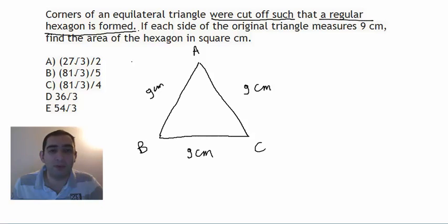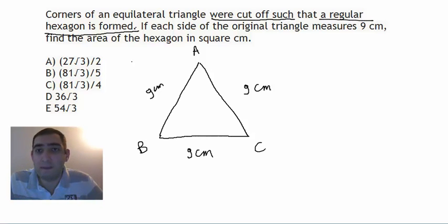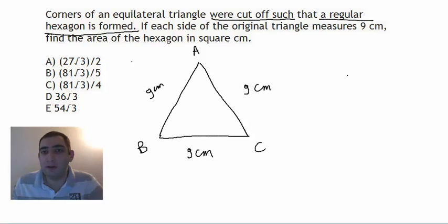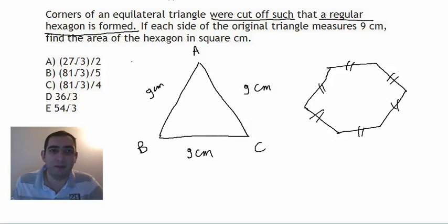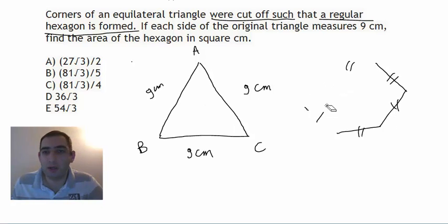A regular hexagon is a polygon with six sides — not arbitrary sides, but equal sides. It's a regular hexagon, so it has this shape with six equal sides, each equal to the others.